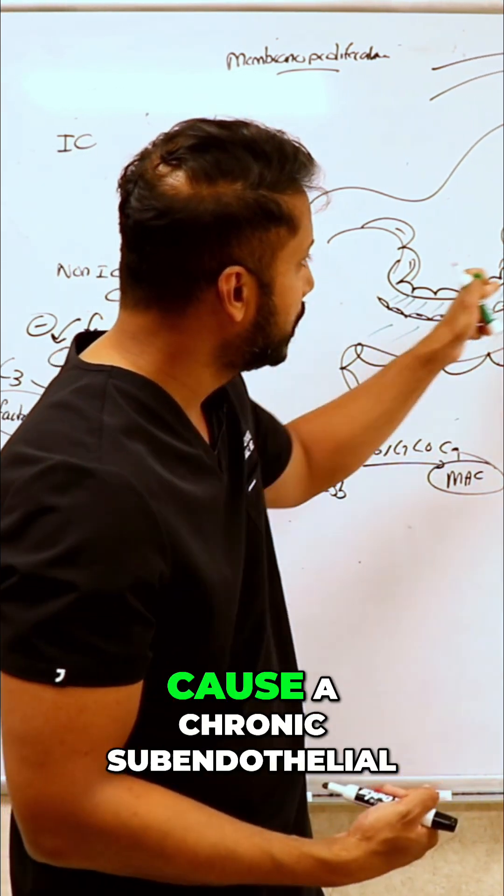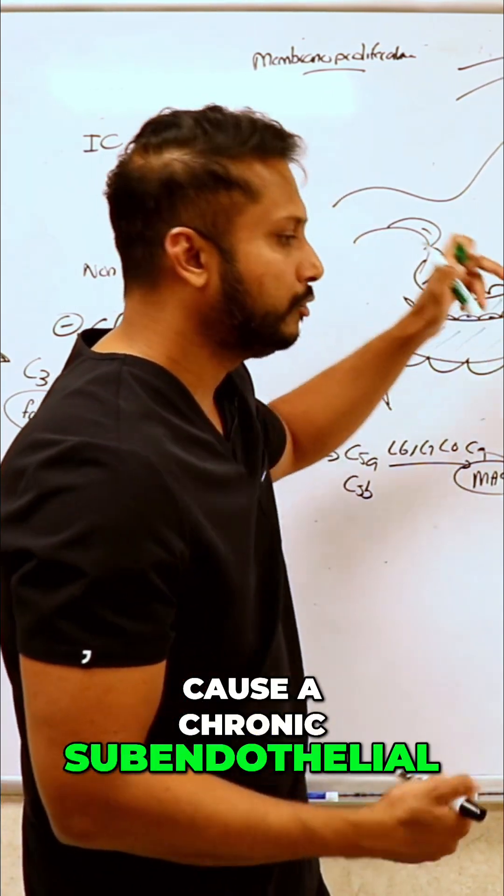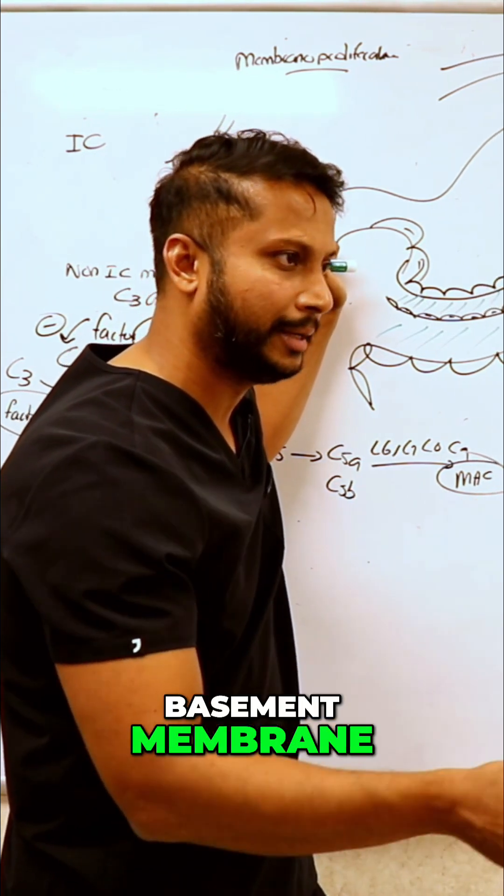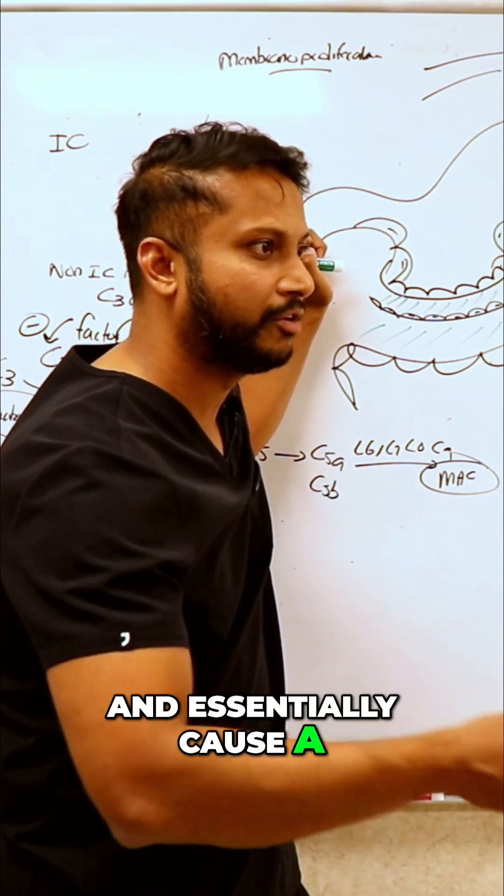It's going to cause a chronic sub-endothelial injury that's going to sustain so much that it's going to form a false basement membrane and essentially cause a tram tracking appearance.